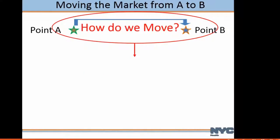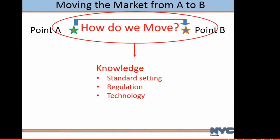How do we move from A to B? It's a story about knowledge dissemination, standard setting — these guys are going to talk about that — and regulation. We got that public signal. One thing I want to briefly mention is technology. I think of technology as embodied knowledge — we're using technology, and it's developing and can lower costs.